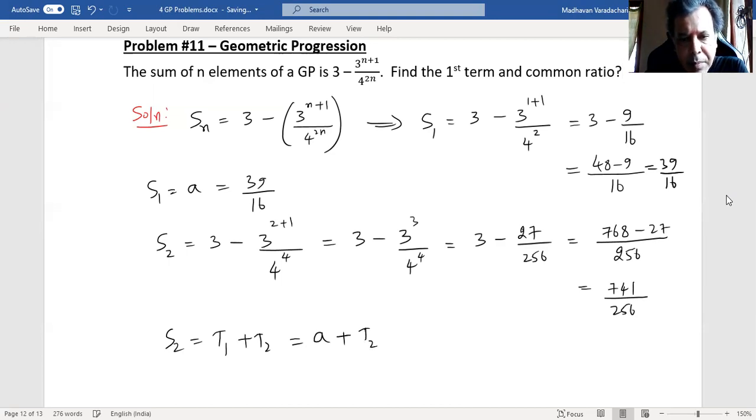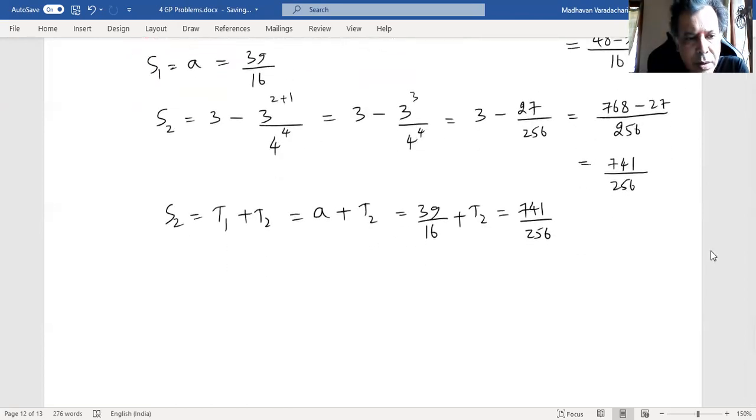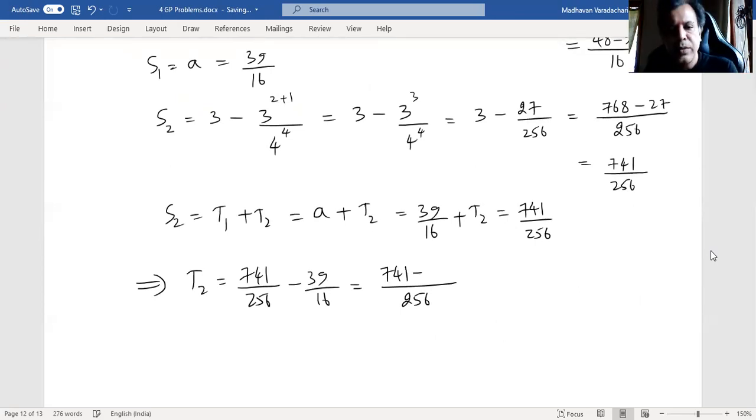Term 2, let us see. A is known to be 39 by 16. Term 2 is equal to 741 by 256. Now let us identify what is term 2. Term 2 is 741 by 256 minus 39 by 16.